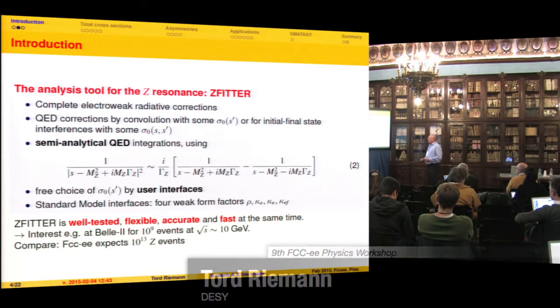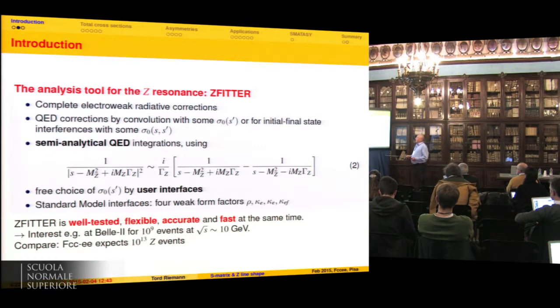Let me start with a short remark about ZFITTER, which is used for that. It contains the complete electroweak radiative corrections to the two-fermion production cross-section plus a bit QCD. The QED corrections are calculated by convolution with some effective cross-section at the reduced energy after initial state radiation or for the initial final state interference with some generalization of that. The weak physics is contained in some compact building block, which makes it possible to speak about Z-boson physics without loops.